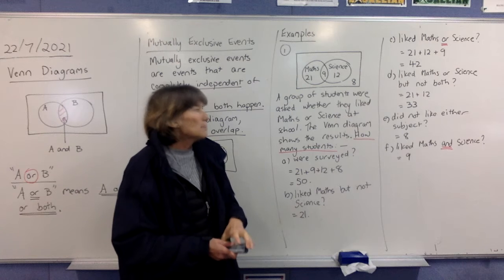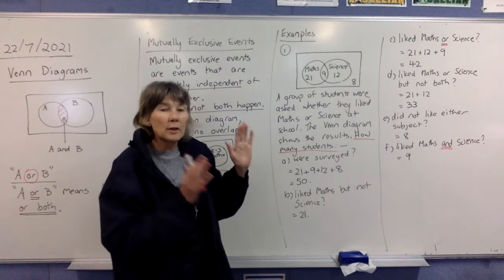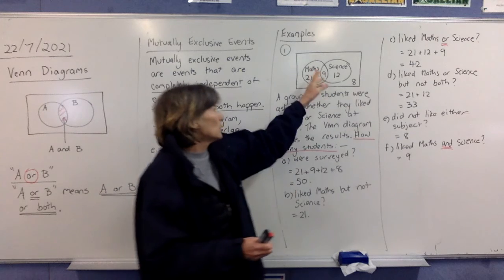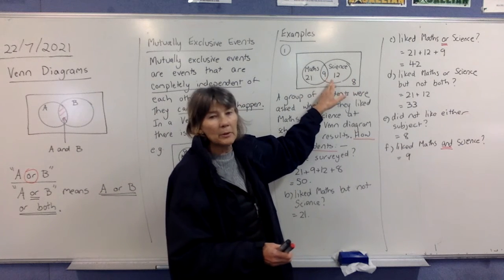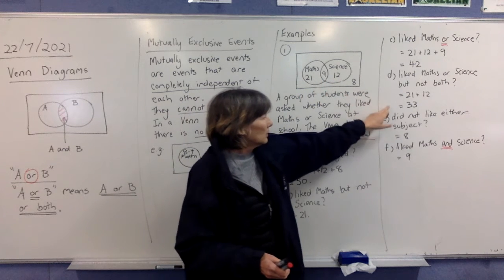All right. In D, liked maths or science, but not both. So this time they're trying to qualify what they actually mean. We want maths or science, but not these people in the middle that like both. So it's just 21 plus 12, 33.